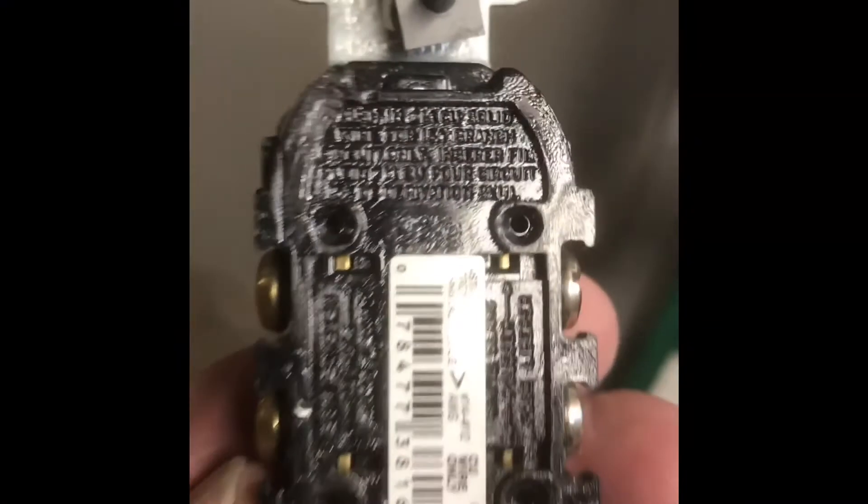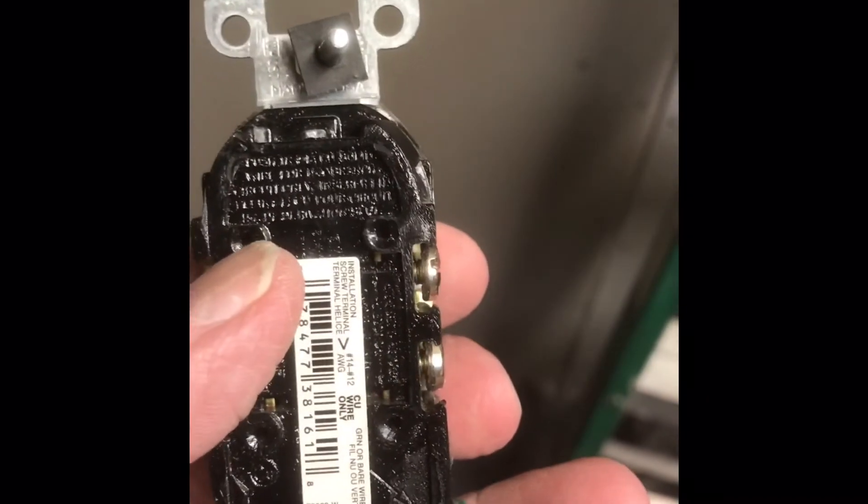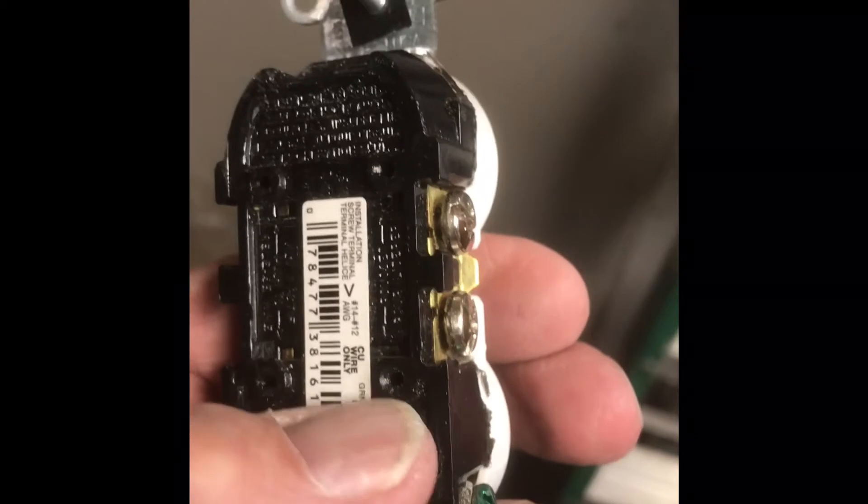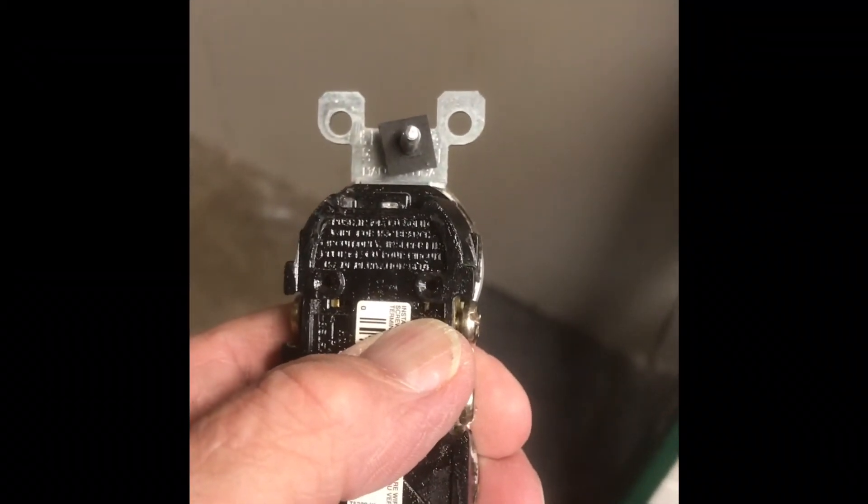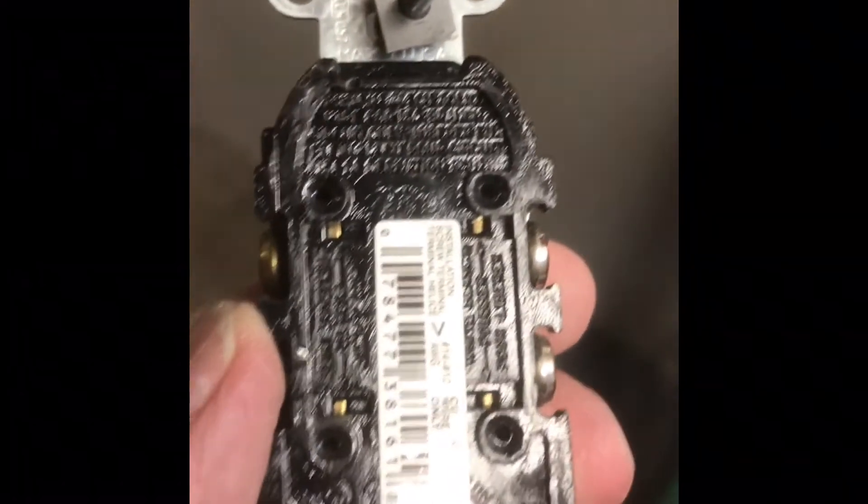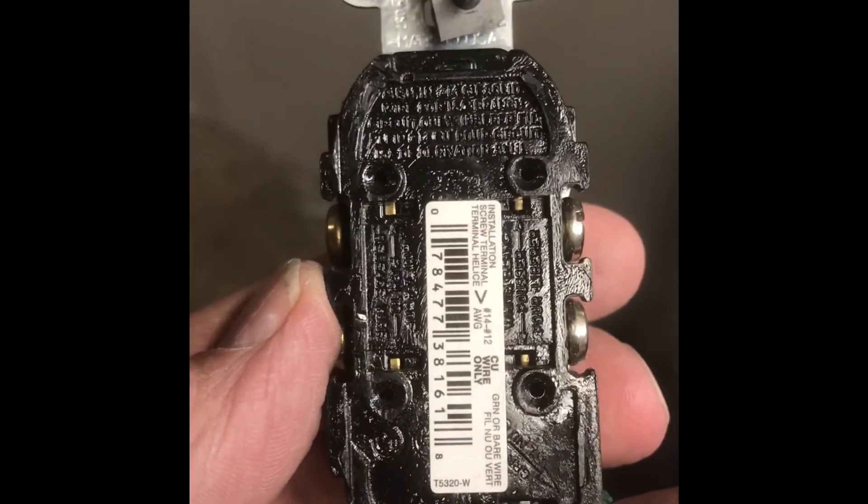This is on the back of it. If you have solid core, you'll just shove it into the holes there. There's two on each side, two for the gold and two for the silver. And then your ground wire is still going to be wrapped around the green screw. You'll still have to wrap that one on there just like that.